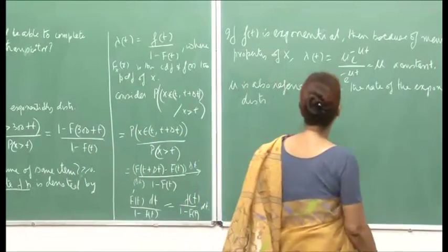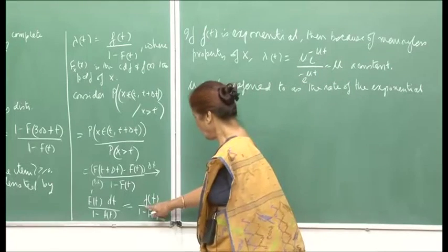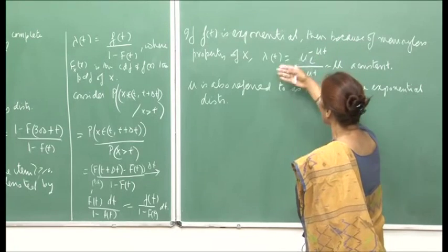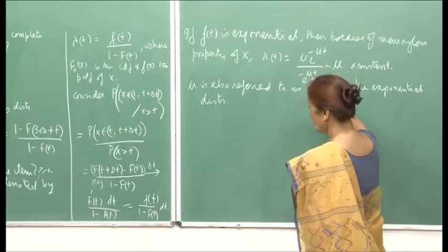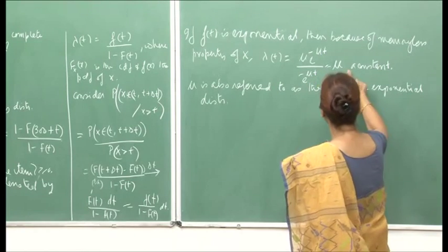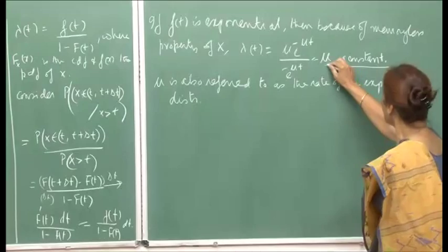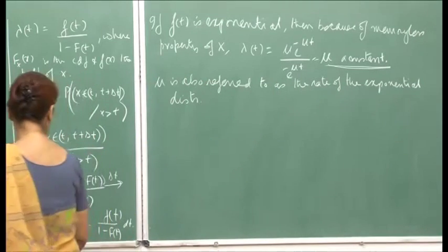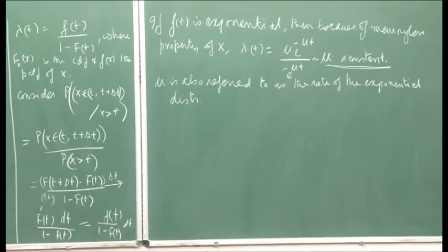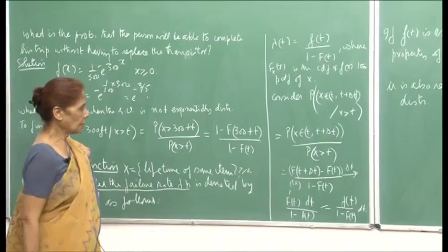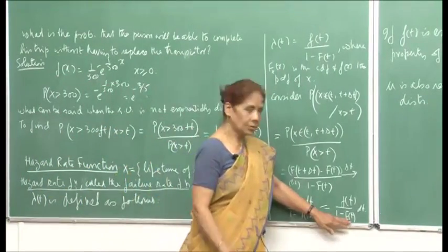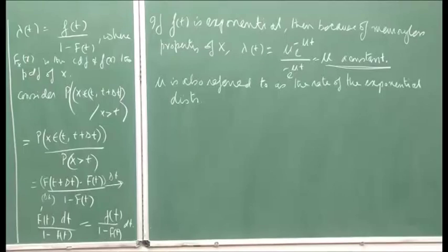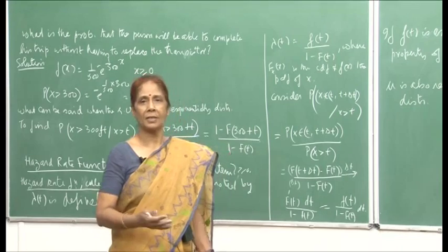For exponential f(t), using symbol mu for the parameter, the PDF is mu e raised to minus mu t and 1 minus F(t) is e raised to minus mu t. So lambda(t) equals mu, a constant. For an exponential random variable, the hazard rate is constant, not a function of t. Since it is memoryless, the probability of failing at any time is the same, so the rate is also constant.